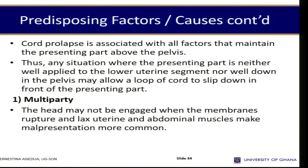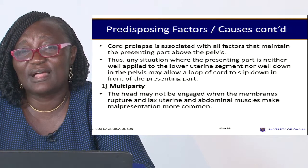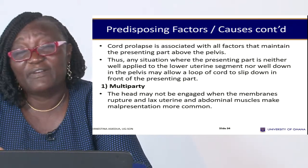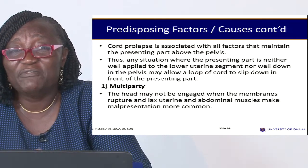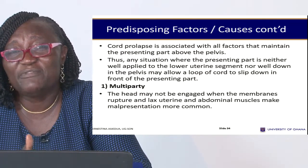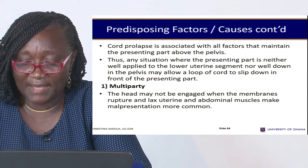The first predisposing factor is multiparity. In multiparous women, the head may not be engaged when the membranes rupture because the uterine and abdominal walls are weak. Weak abdominal muscles are unable to direct the fetus toward the canal, so the fetus keeps moving and the cord can come in front of the presenting part and prolapse.